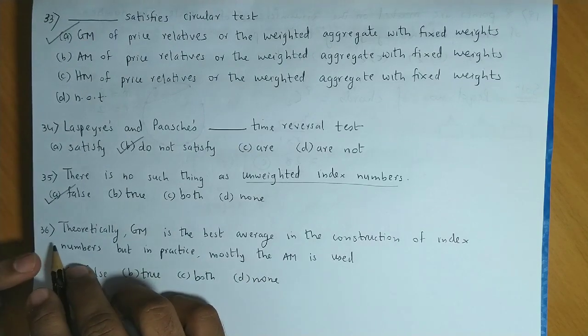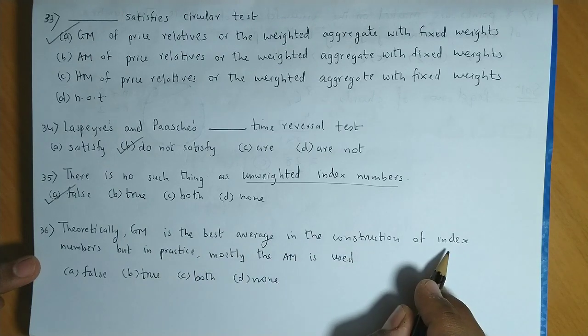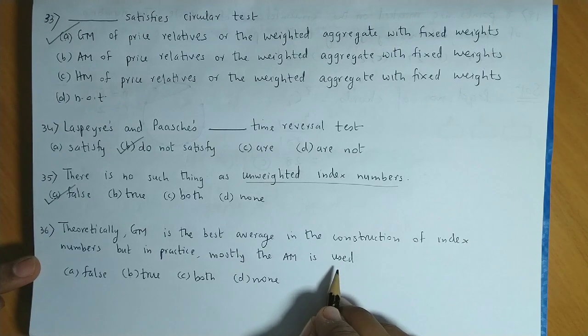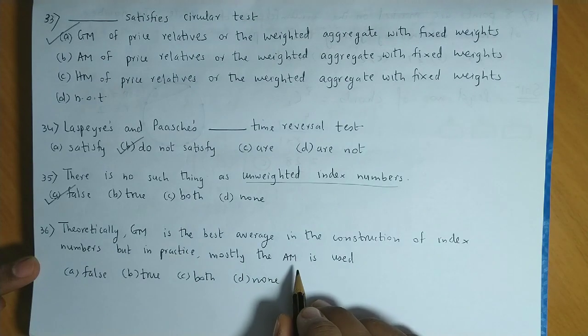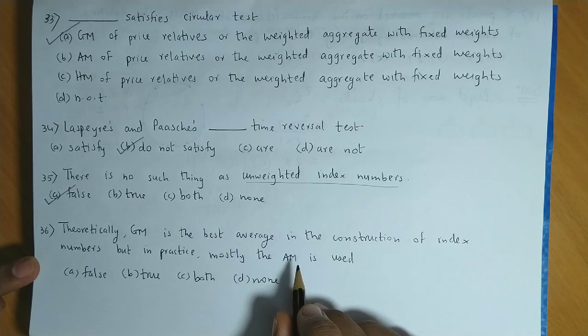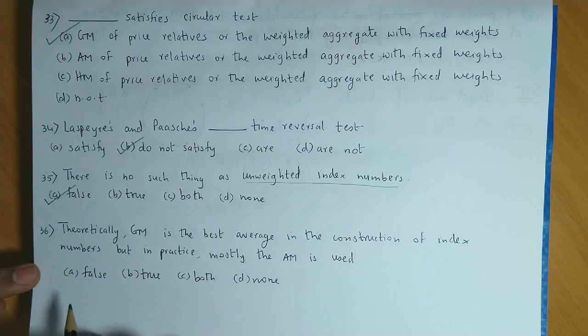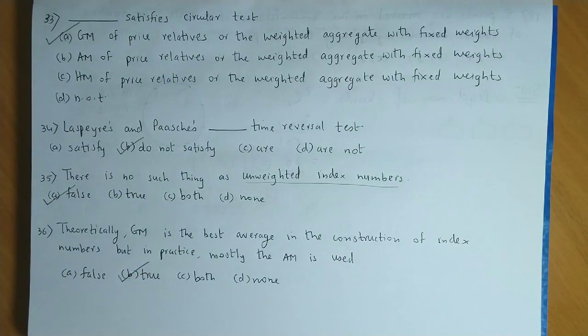Question number 36: Theoretically geometric mean is the best average in construction of index numbers, but in practice mostly arithmetic mean is used. And yes this statement is true. Geometric mean theoretically toh kaafi aachha rahata hai, lekin uske calculations difficult hoonay ke wajay seh, aur kuch limitations hoonay ke wajay seh, hum prefer karte hai AM over GM. So 36 ka answer hai option B, that is true.